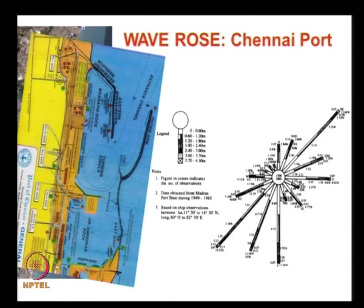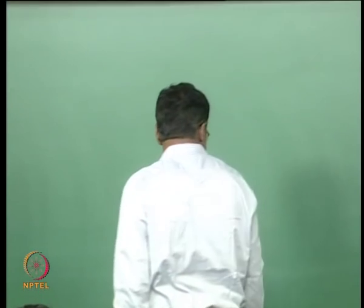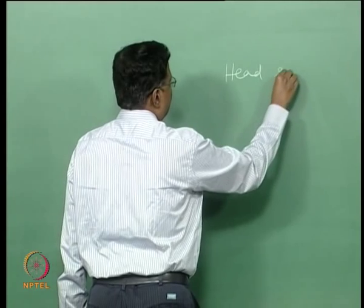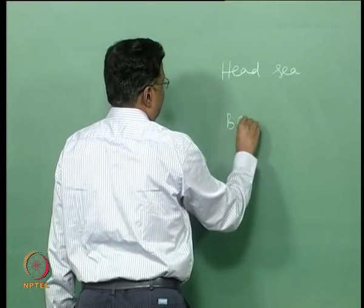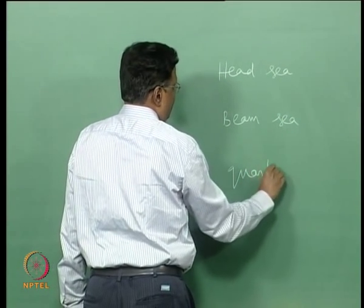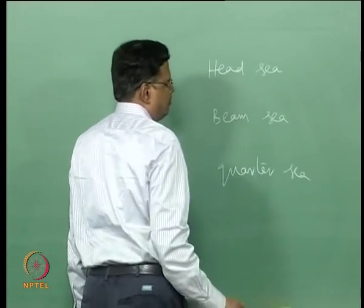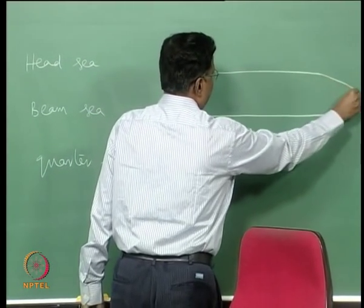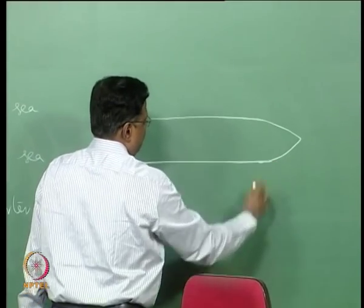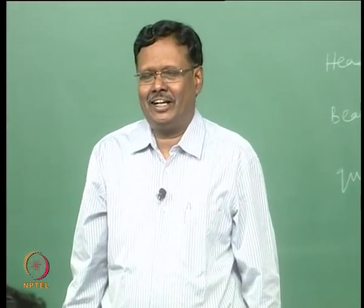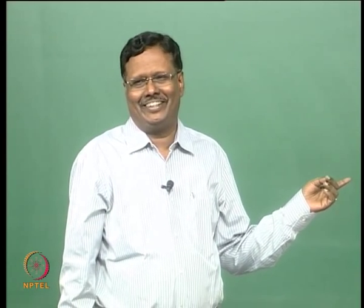We have three conditions for a ship's relation to the wave direction: one is called head sea, another is called beam sea, and another is called quarter sea. I am drawing the plan of the ship — please draw along, otherwise you will get sleep. The ship should look like a ship.